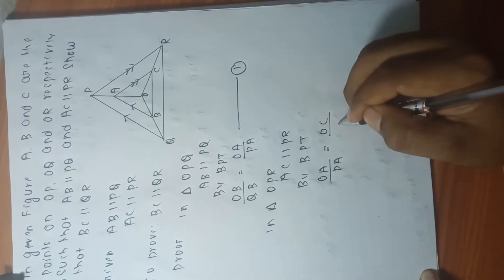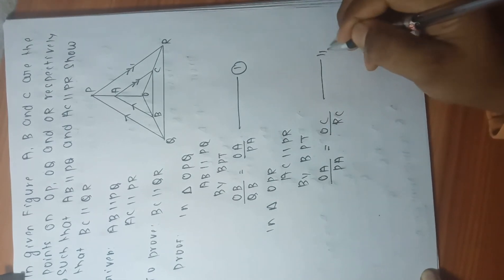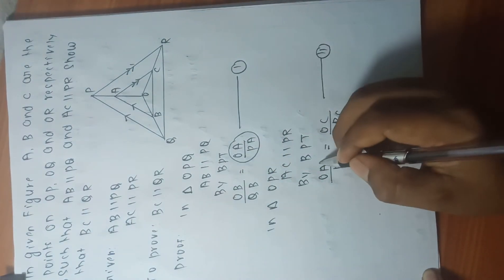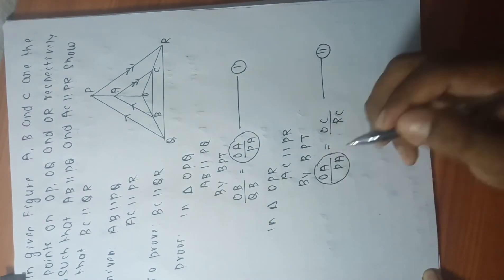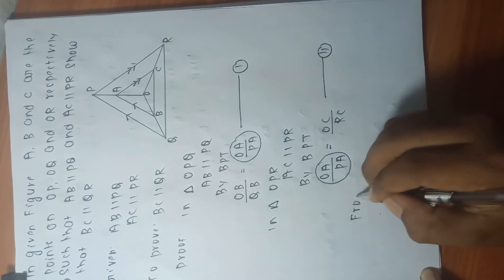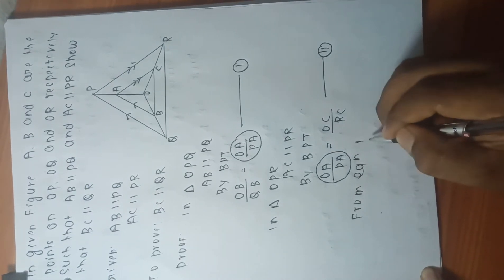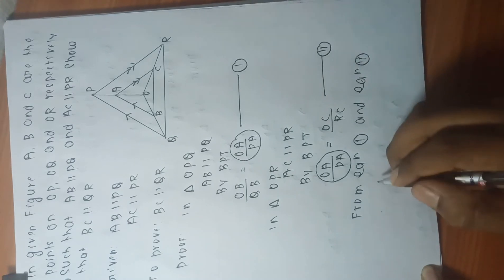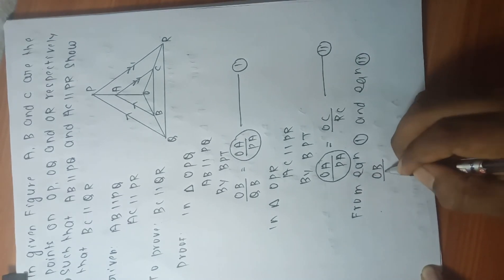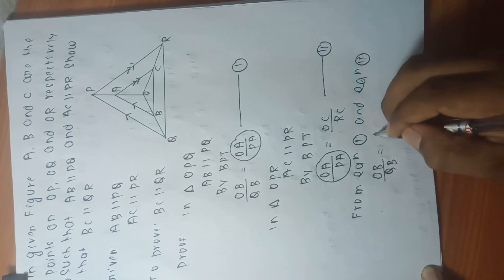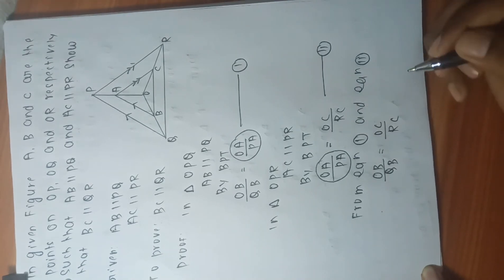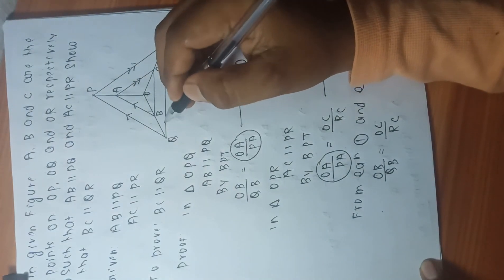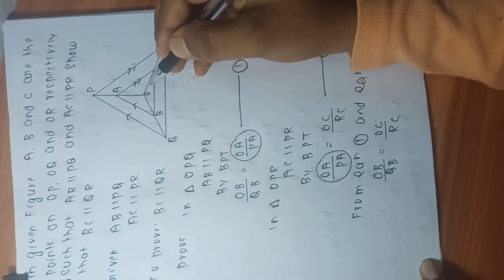From equations 1 and 2, OA by PA and OA by PA are equal. So from equations 1 and 2 it implies that OB by QB equals to OC by RC.